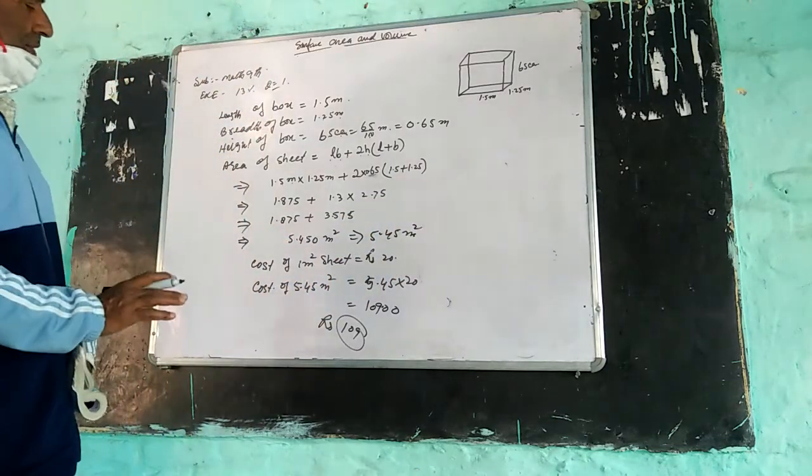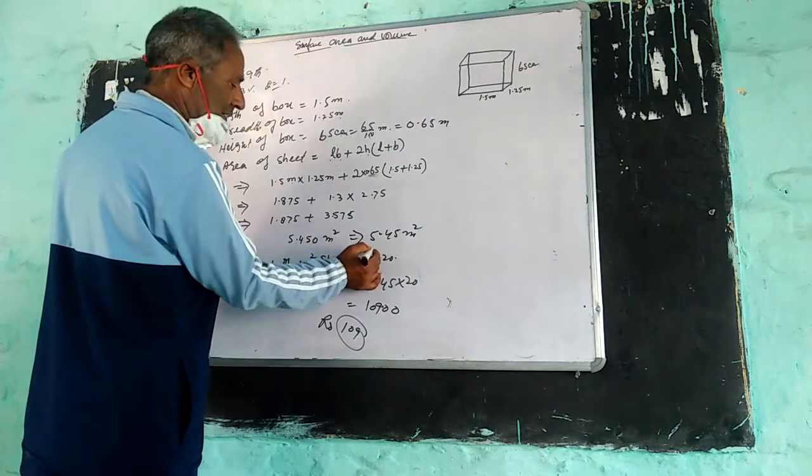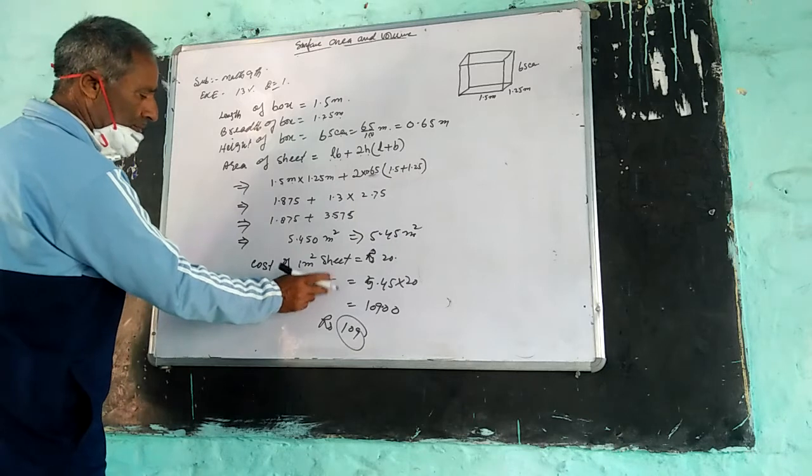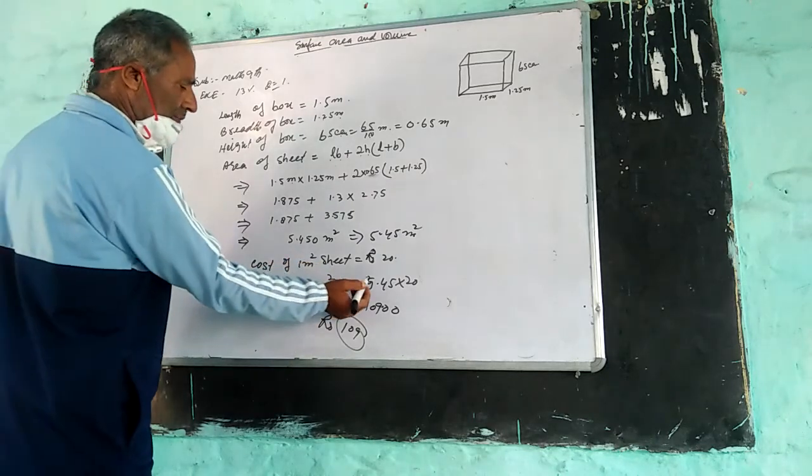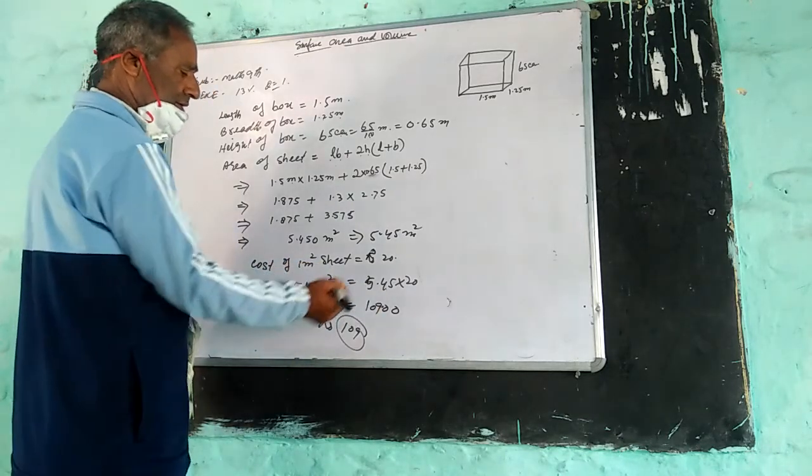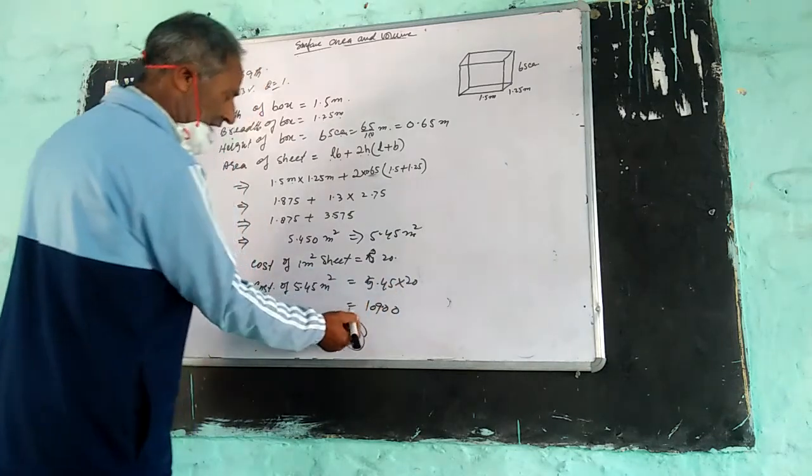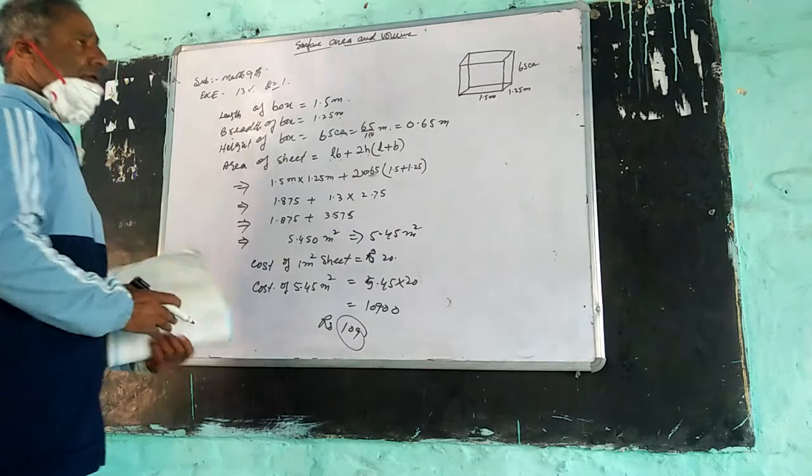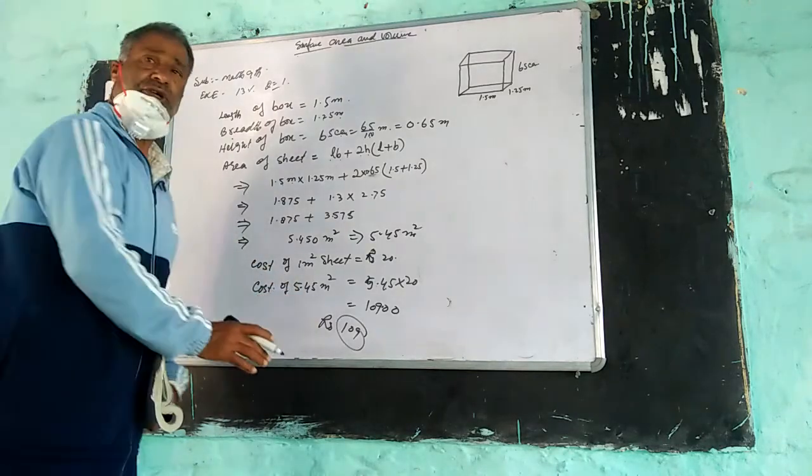Now, the cost: cost of 1 meter square sheet is rupees 20. Cost of 5.45 meters square sheet is equal to 5.45 times 20, that is equal to 109. So the cost of the sheet is equal to rupees 109.